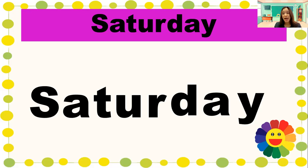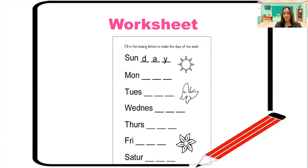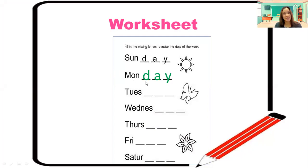Okay, I have prepared a worksheet for you. What you're going to do is fill in the missing letters to make the days of the week. Example: the missing letters are D-A-Y, so the day is Monday. Do you understand, K3? Okay, you may start now.